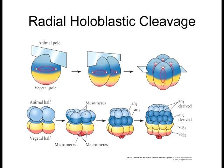The meso- and macromeres are under conditional specification. These cells require interactions with the micromeres through both paracrine and juxtacrine factors. Both paracrine and juxtacrine interactions are required between the micromeres and these other cells for them to fully develop and take on their respective fates — which is why we call this conditional specification. The micromeres, on the other hand, are under autonomous specification; they don't receive signals from other cells to differentiate into the types of cells they need to become.